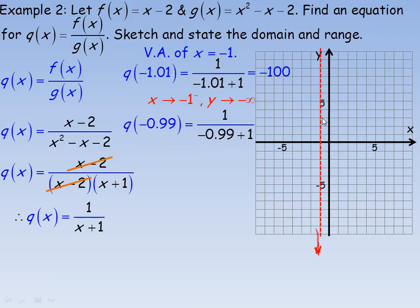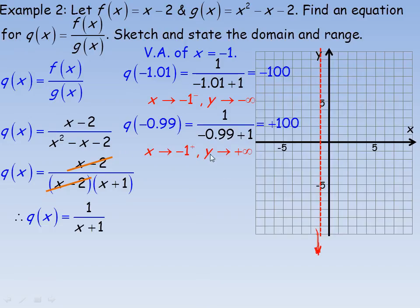Testing just to the right at x equals negative 0.99, the denominator becomes positive 0.01, and 1 divided by positive 0.01 equals positive 100. So as x approaches negative 1 from the right, y approaches positive infinity — the function rises very steeply on the right side of the asymptote.